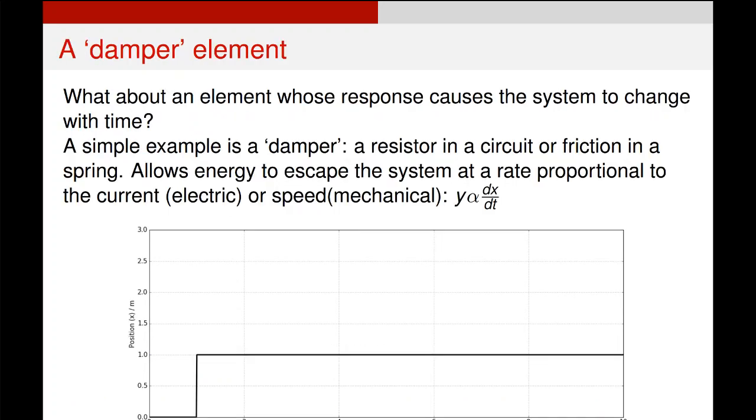So let's take a first look at a time-dependent element. This is an example of a damper element, or a derivative element, if you prefer. Examples of this are a resistor in a circuit, or friction in a spring, and essentially, it allows some of the energy to escape the system. In the previous example, all the energy in our system was locked up. It couldn't go anywhere, and that's why it was proportional. However, in the real world, we have resistance. We have friction. We have these ways where things can get out of the system.